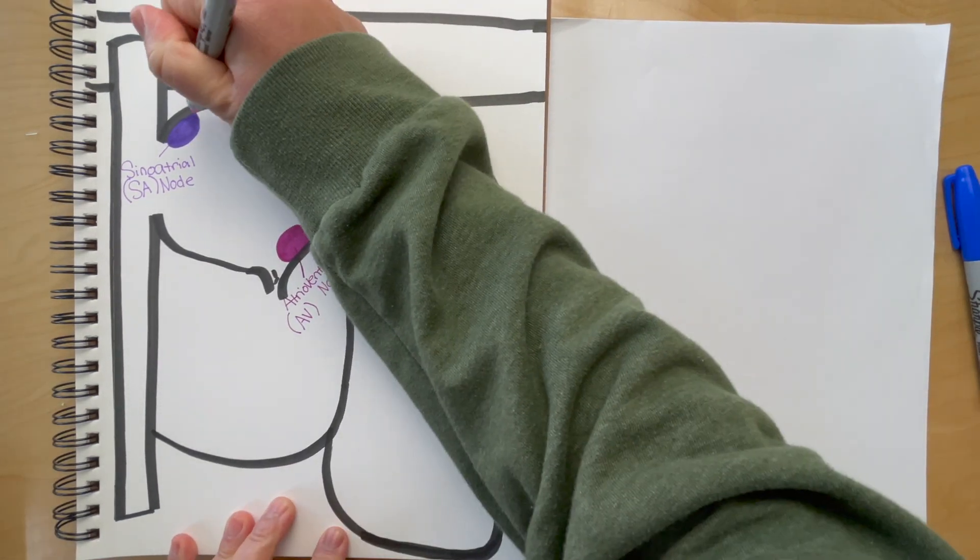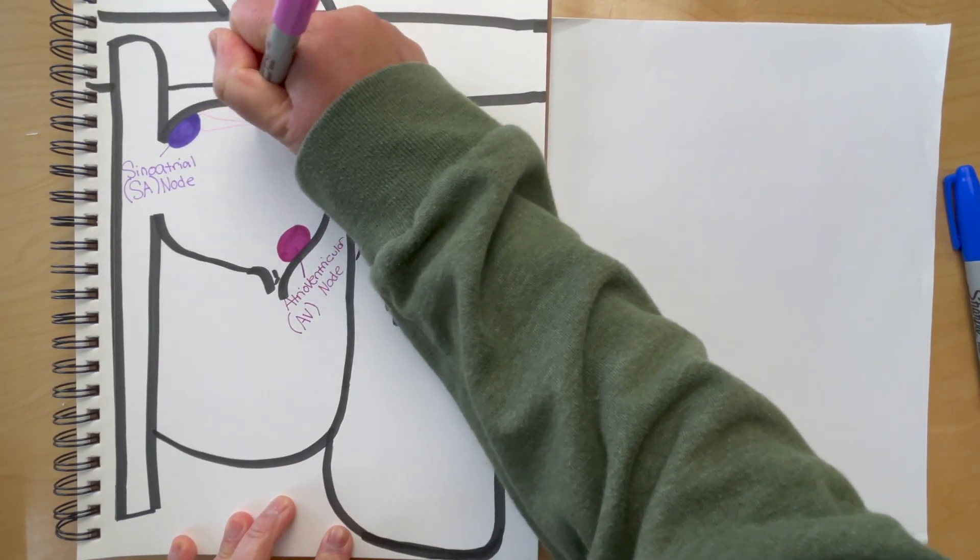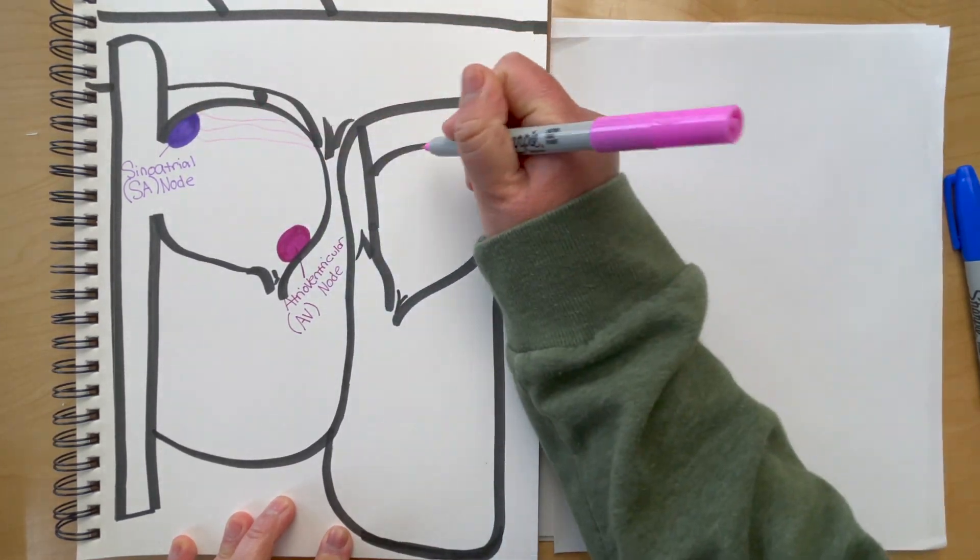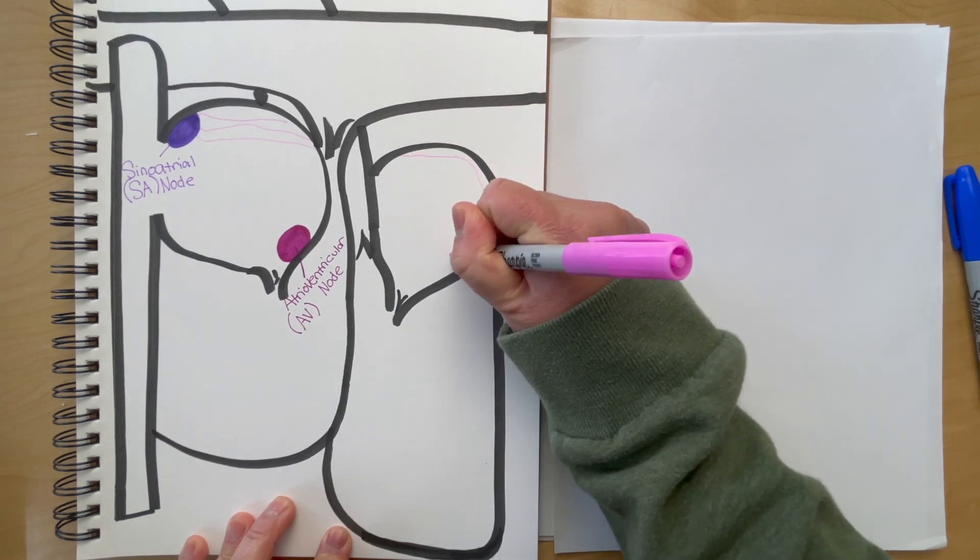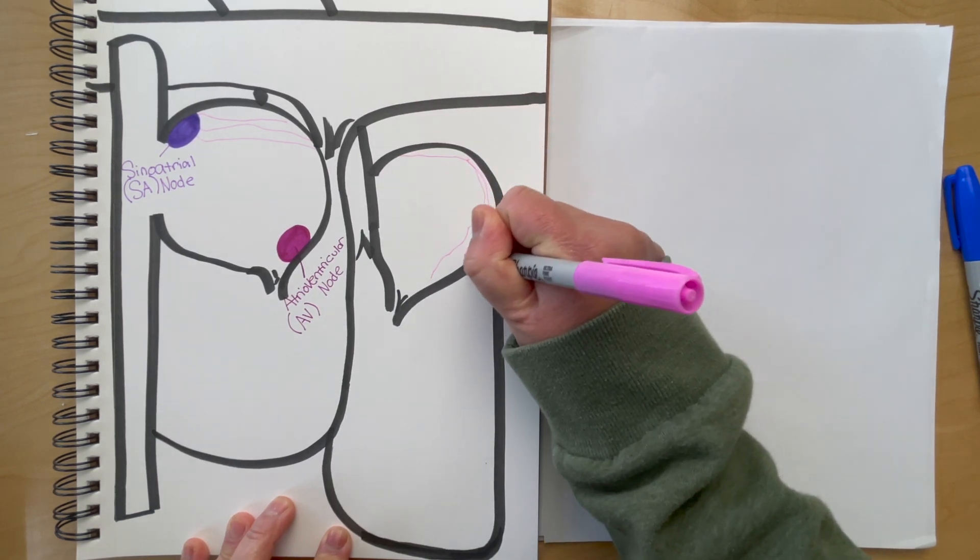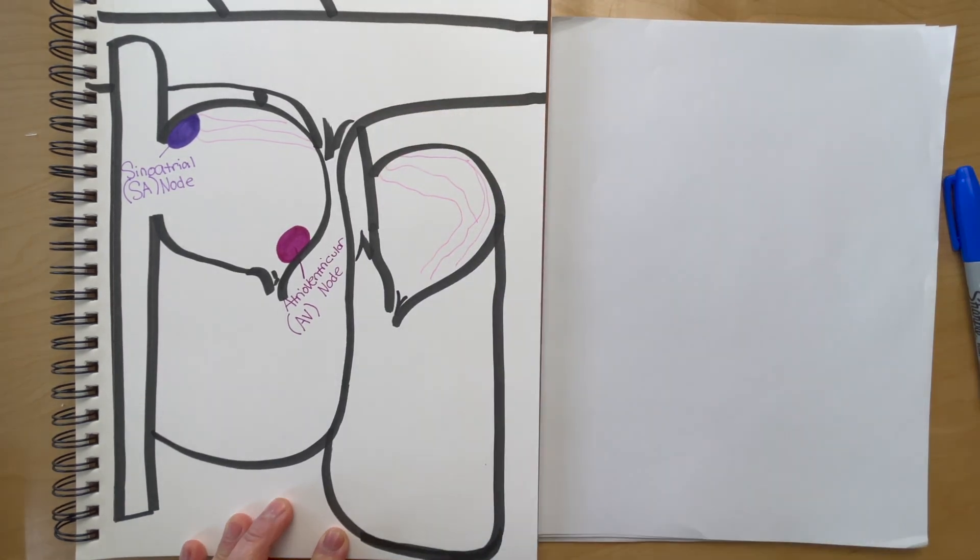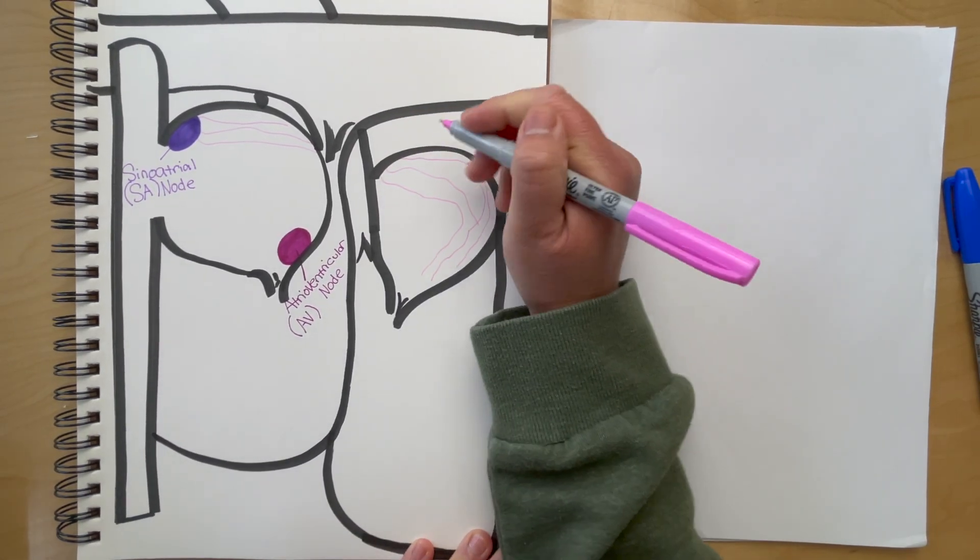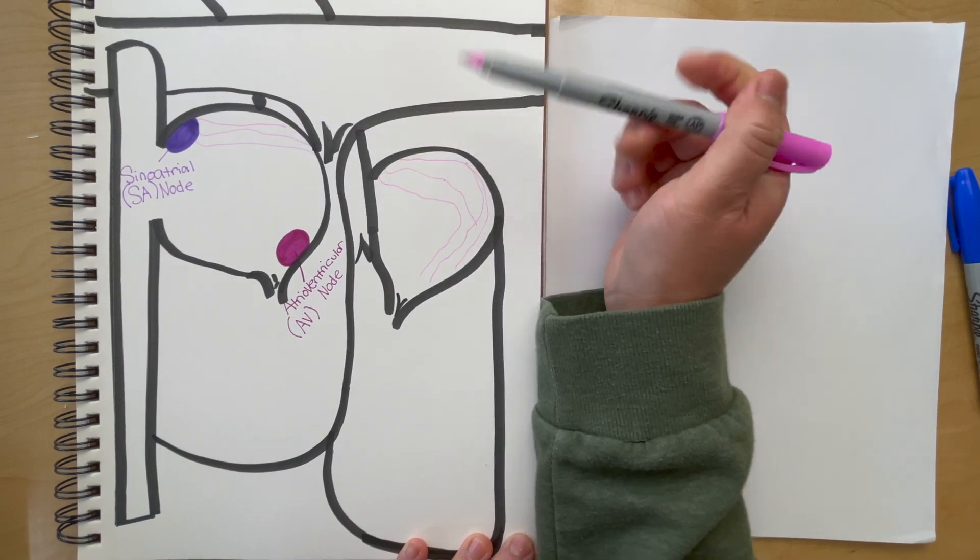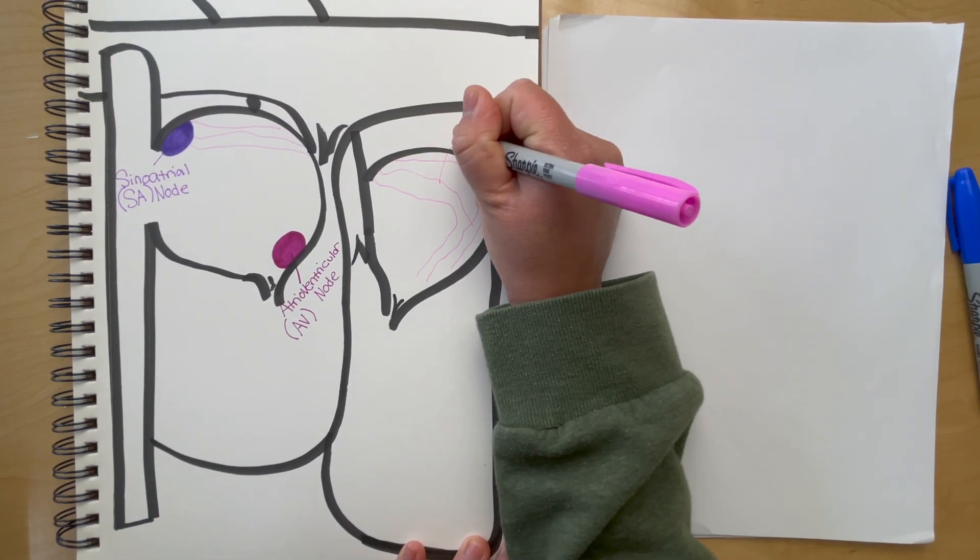Next we have these fibers that come across the atria. They start at the sinoatrial node and go all the way to the left atrium. These spread the electrical impulses across the atria and cause the atria to contract. Bachmann's bundle is also called the interatrial bundle.